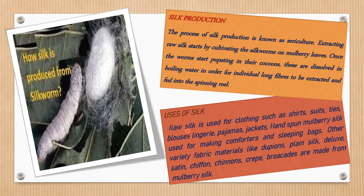Now, what are the uses of silk? Raw silk is used for clothing such as shirts, suits, ties, blouses, lingerie, pajamas, and jackets. Floss from mulberry silk is used for making comforters and sleeping bags. Other fabric materials like dupioni, plain silk, deluxe, chiffon, crepe, and brocades are also made from mulberry silk.